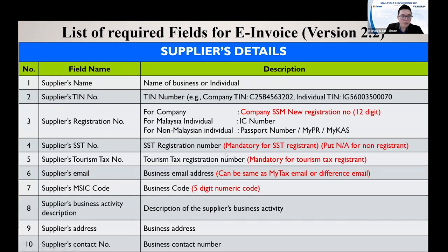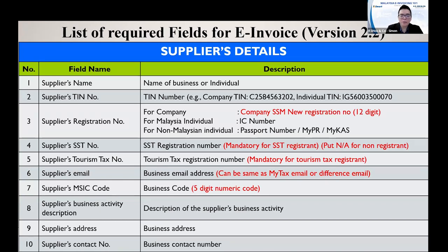If your company is registered for SST, you must key in the SST number; if not, leave it blank. The business email address is very important because IRBM will use it to send notifications to you. This email can be your general company email, or you can assign it to a specific team — for example, the sales team email for sales invoices, and a purchase team email for purchase-related items.